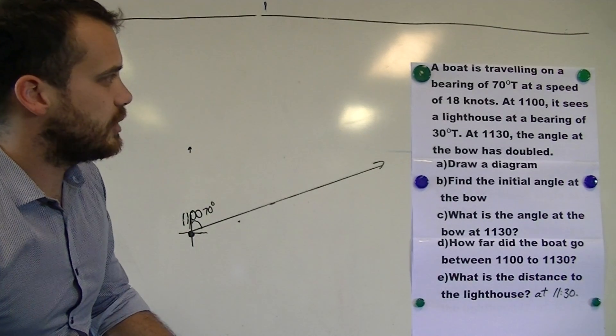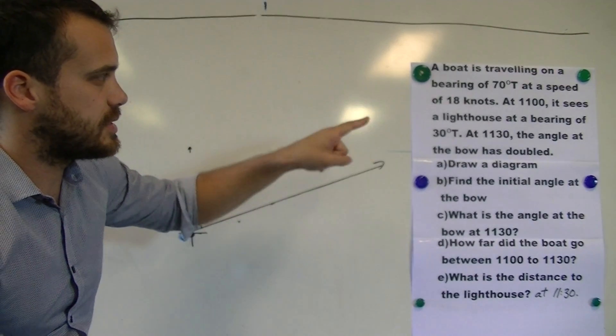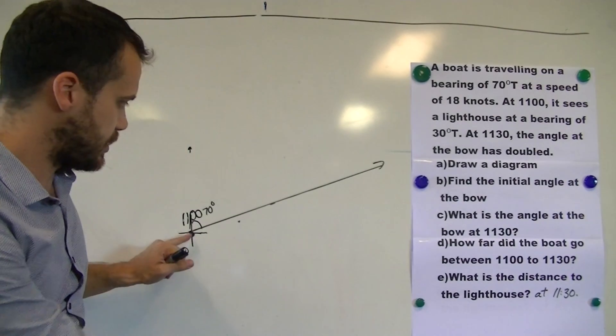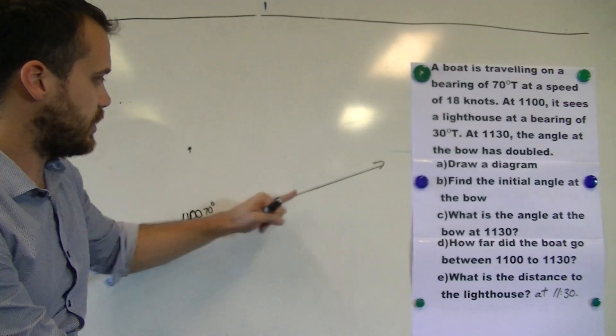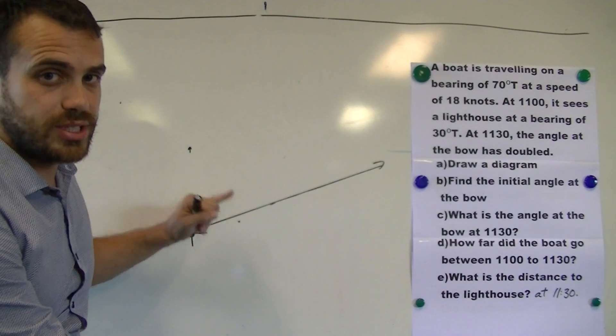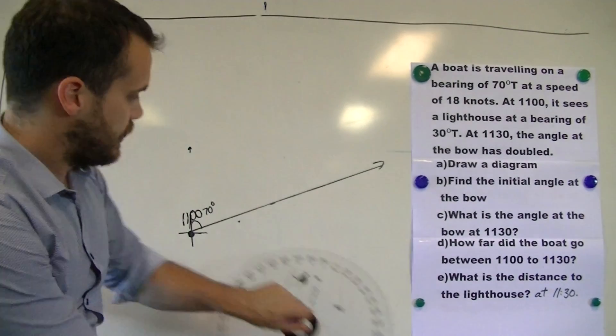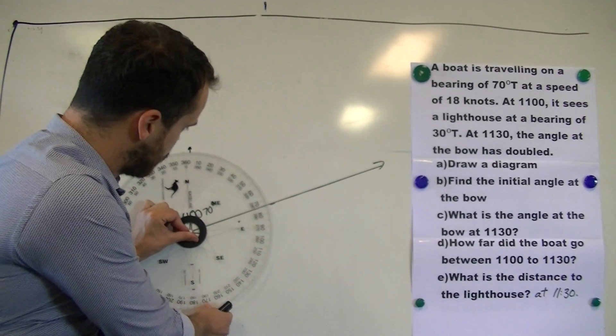I'm just going to mark in there that that's 70 degrees. Now it says at 11 o'clock it sees a lighthouse at a bearing of 30 degrees. Now that means that the boat was here. It's travelling in this direction. And it sees a lighthouse at a bearing of 30 degrees.